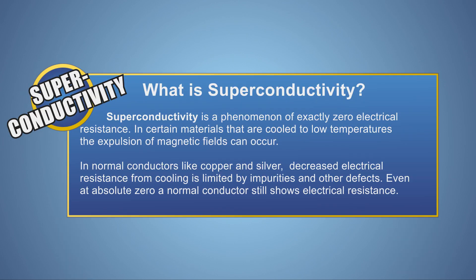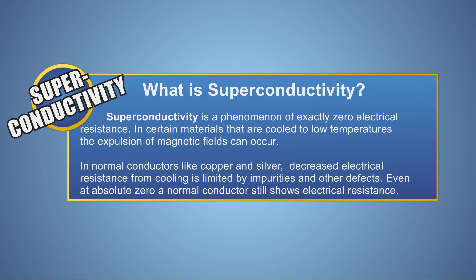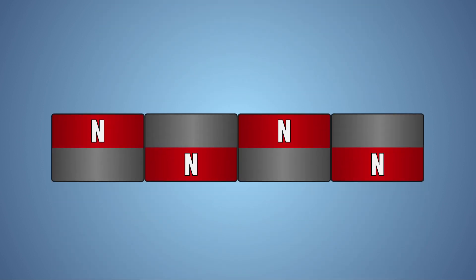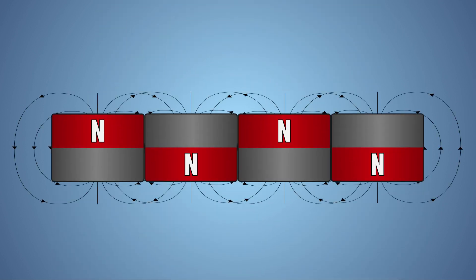Superconductivity is a quantum state of matter with exactly zero electrical resistance. The magnets in our experiment each have a north and south pole. They have their own magnetic field and they're laid out in an alternating pattern.